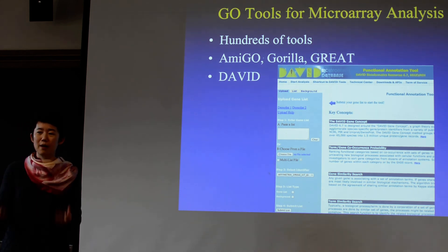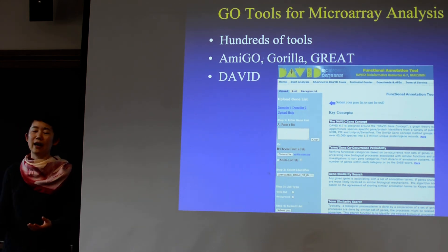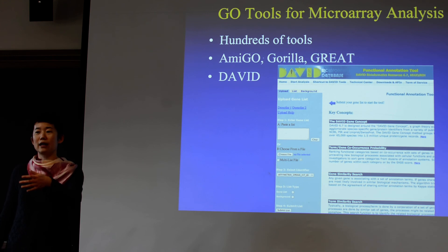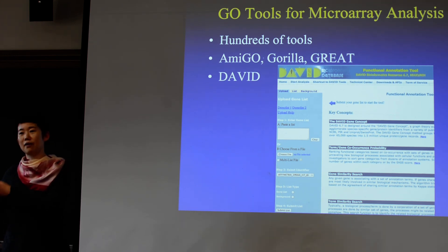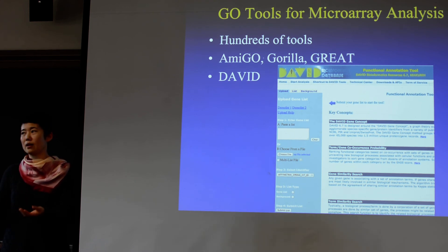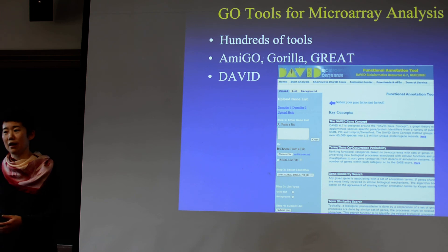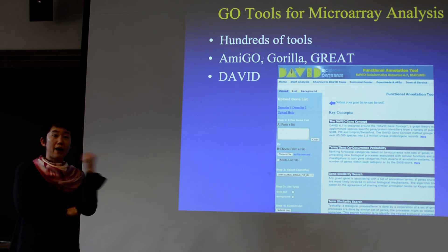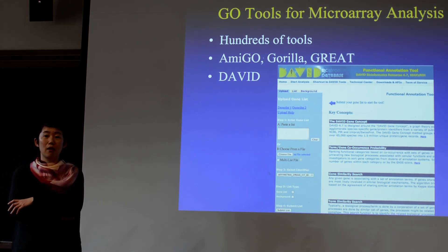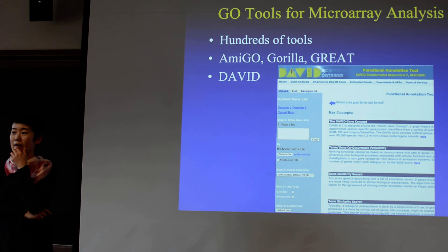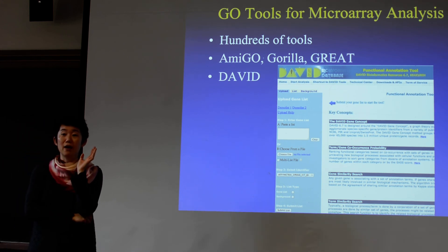You can write a paper saying: I did this microarray experiment, I treated the cell with a drug, and instead of just listing 300 upregulated genes, you say we see genes upregulated enriched in specific pathways, specific biological functions, or related to the cytoplasm or mitochondria. The question is: how many GO terms does the tool have to test when you give it a gene set of 300? They have to test every single one of them.